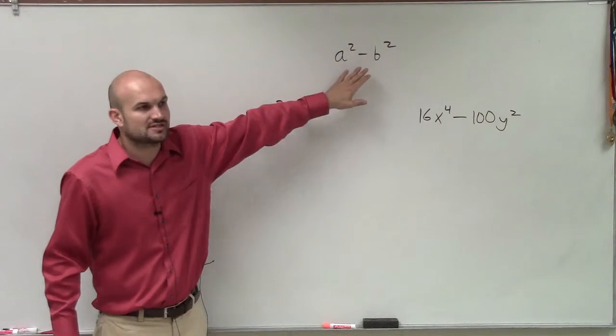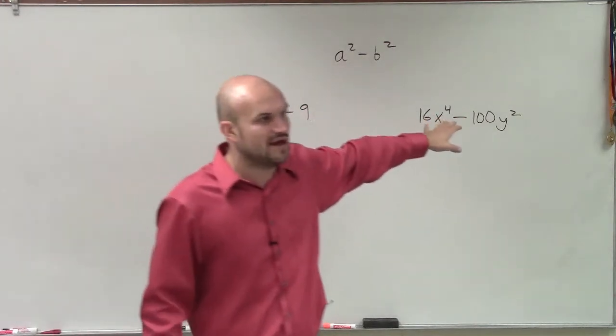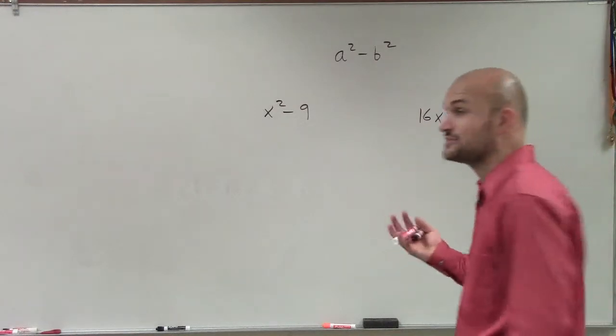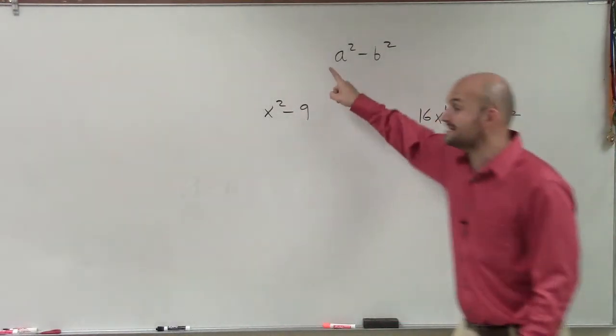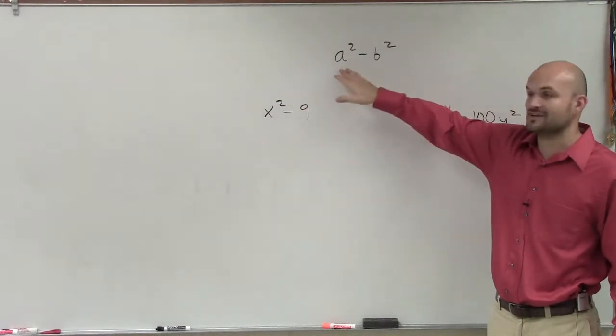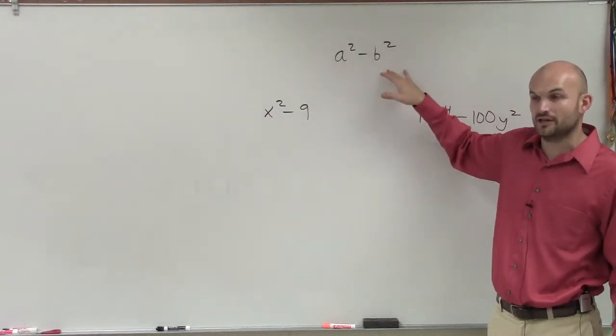What the important thing you guys need to understand, just because it has two terms does not mean you have to factor by difference of two squares. We can only factor with difference of two squares when it is in the form of a squared minus b squared. That means I have a square number minus another square number.